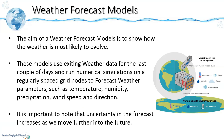First of all we need to understand how weather forecast models work. The aim of weather forecast models is to show how the weather is most likely to evolve. These models use weather data for the last couple of days and run numerical simulations on irregularly spaced grid nodes to forecast weather parameters such as temperature, humidity, precipitation, wind speed and direction.